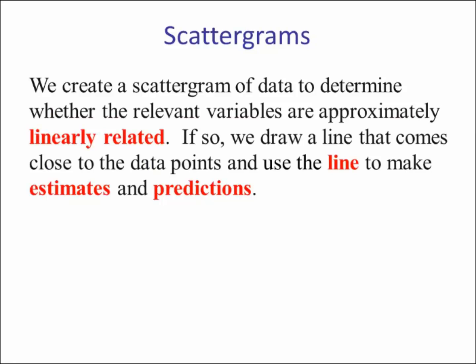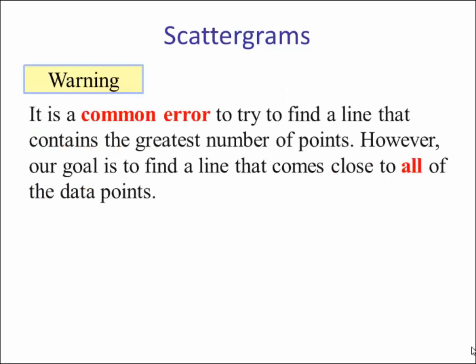We create a scattergram of data to determine whether relevant variables are approximately linearly related. If so, we draw a line that comes close to the data points and we use the line to make estimates and predictions. It is a common error to try to find a line that contains the greatest number of points. However, our goal is to find a line that comes close to all the data points.